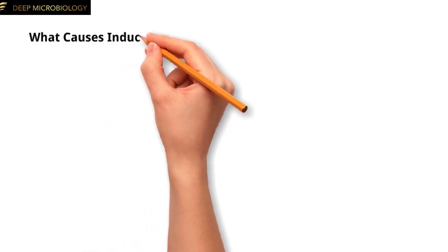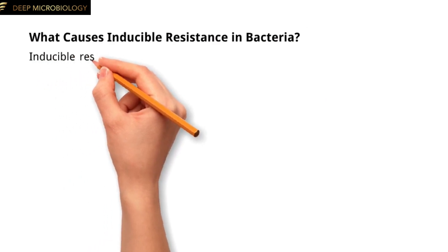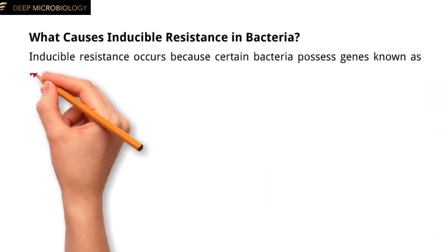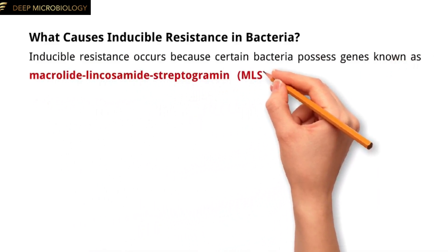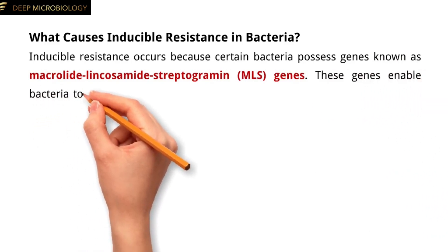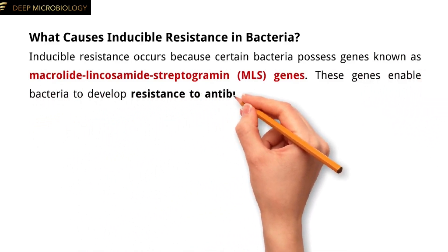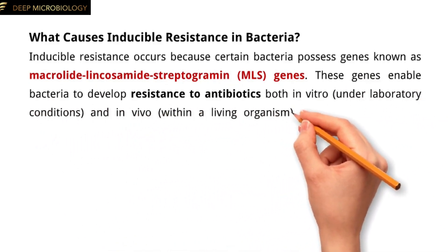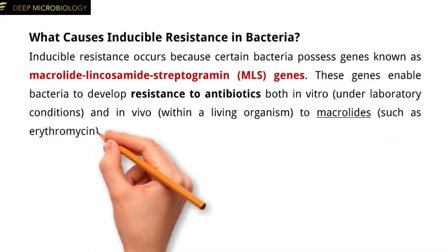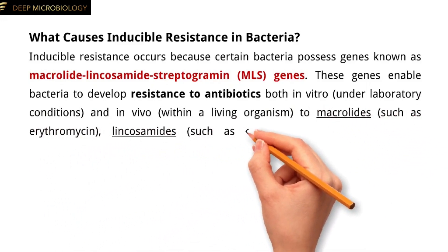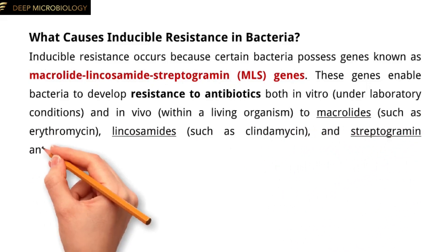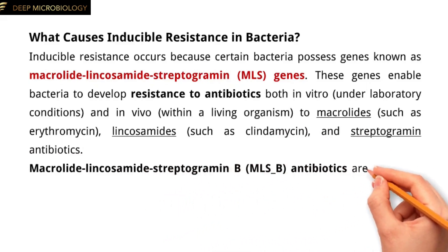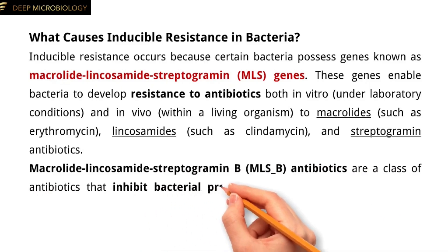Inducible resistance occurs because certain bacteria possess genes known as macrolide lincosamide streptogramin, MLS genes. These genes enable bacteria to develop resistance to antibiotics both in vitro, under laboratory conditions, and in vivo, within a living organism, to macrolides such as erythromycin, lincosamides such as clindamycin, and streptogramin antibiotics. Macrolide lincosamide streptogramin B, MLSB, antibiotics are a class that inhibit bacterial protein synthesis.